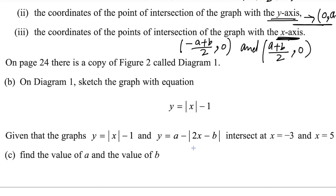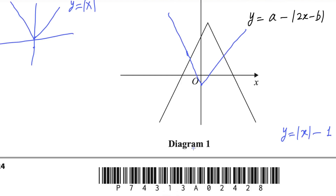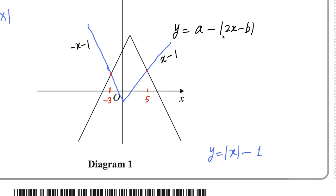For the next part: given that the graphs y equals absolute value of x minus 1 and y equals a minus the absolute value of 2x minus b intersect at x equals minus 3 and x equals 5, find the values of a and b. The two graphs intersect at these two points. The right-hand branch of the blue line has positive gradient so we take the positive value: x minus 1. The left-hand branch has negative gradient, giving minus x minus 1. We can convert the absolute value function into piecewise functions.